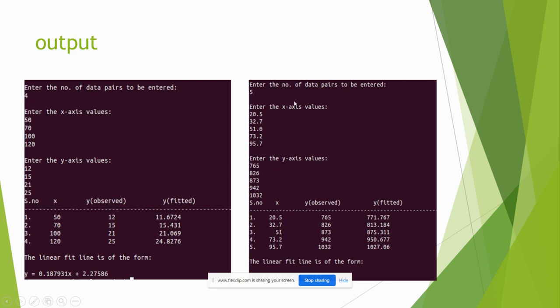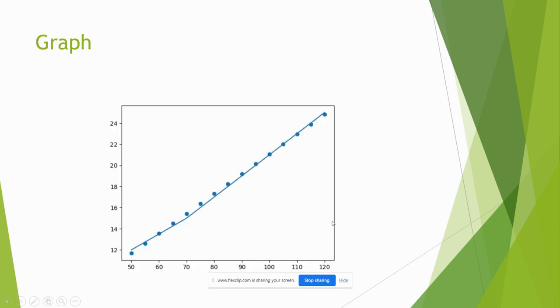For example, if we will give X value 20.5, 32.7, 51.7, 53.9, the output Y axis values, by using this linear regression line, we conclude the output Y axis values 765, 826, 873, 940, 1032. This is our linear regression line by using this least square method. This is the output graph. It is a fit line.